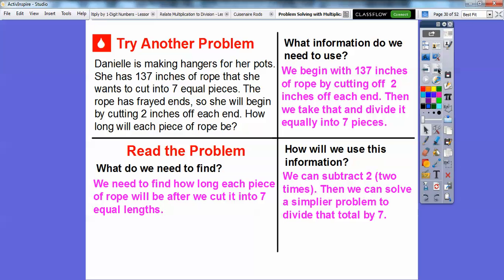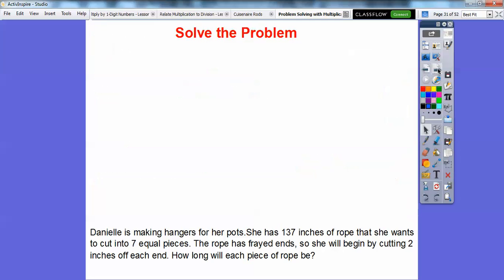How are we going to use this information? We can subtract two twice because we're cutting off two inches on both ends. Then we can solve a simpler problem because it's going to be 133 divided by seven. So two inches off each end makes four inches altogether. 137 minus four is 133.